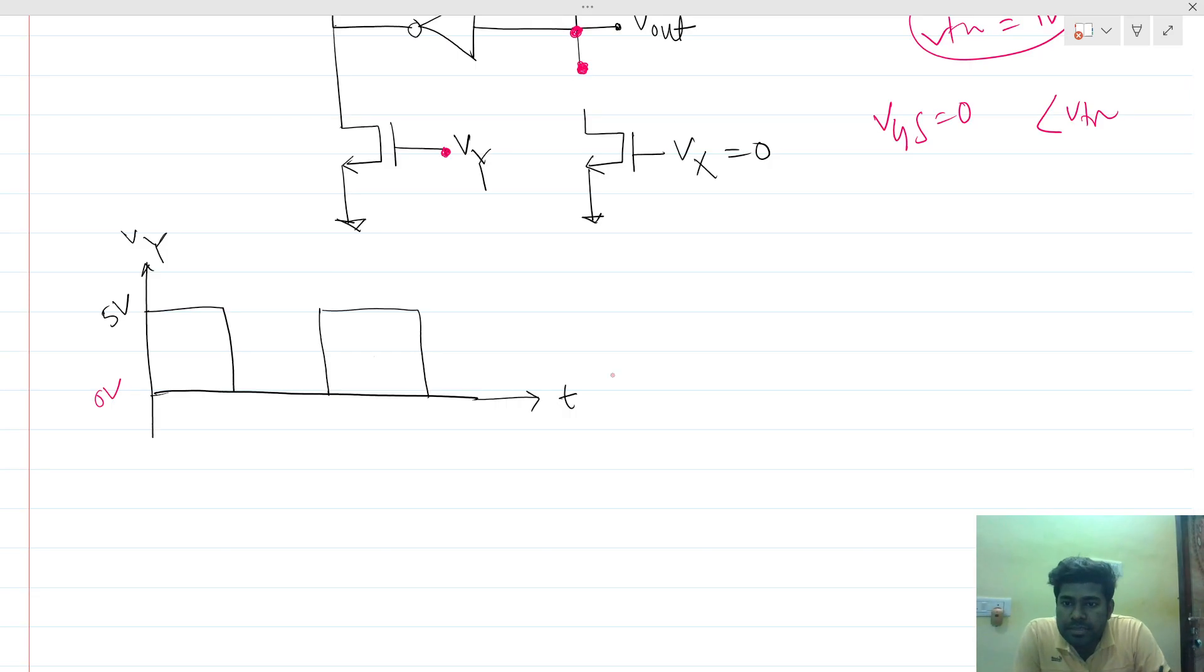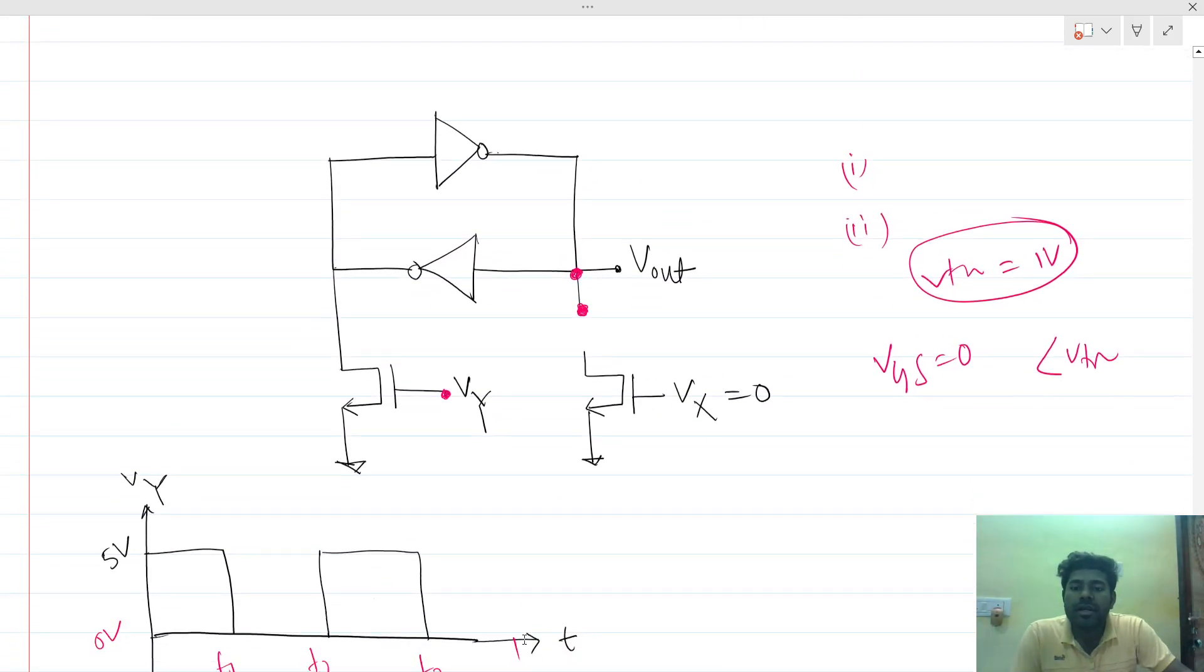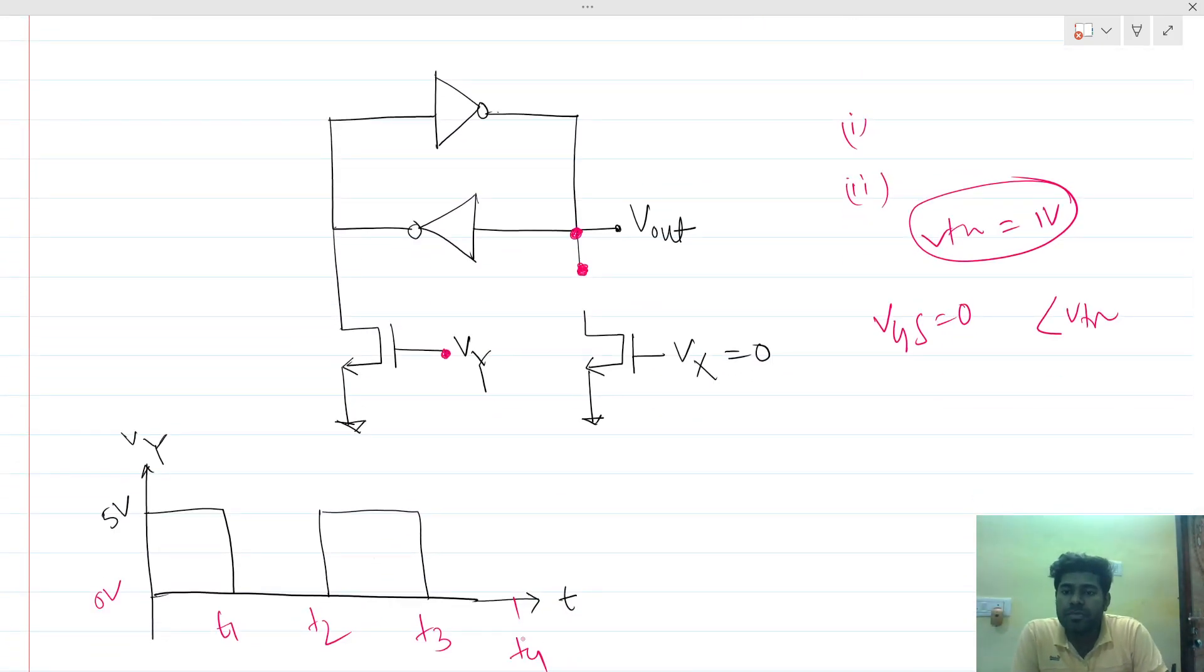Now what will happen at VY? Let's say this is t1, this is t2, this is t3, and this is t4. At 0 to t1, VY is 5 volts.